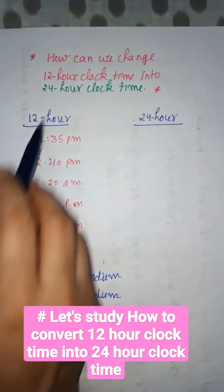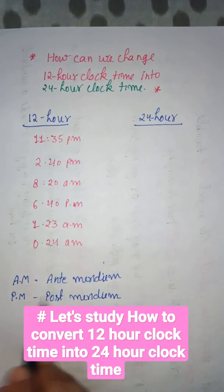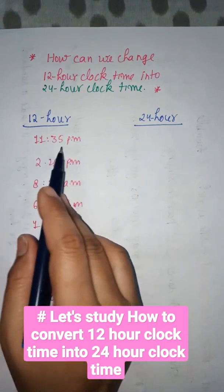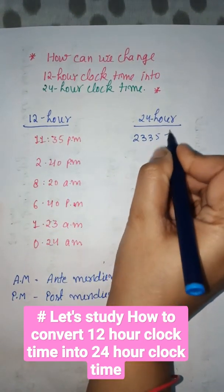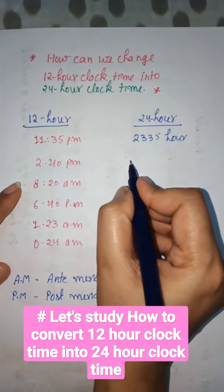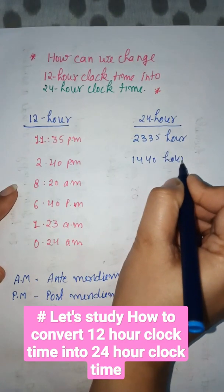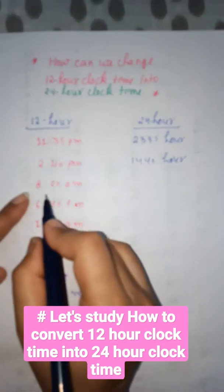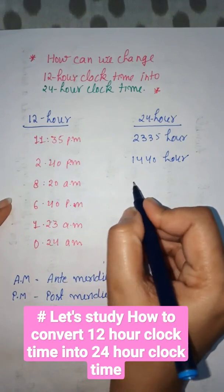How can we change 12-hour clock time to 24-hour clock time? We are going to use anti-meridian and post-meridian. So 11:35 PM will be 23:35 hours — we have to change the hours. 2:40 PM will be 14:40 hours. 8:20 AM — this is 8:20 AM.